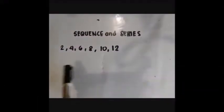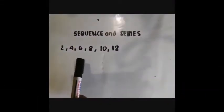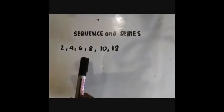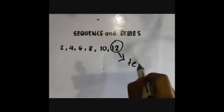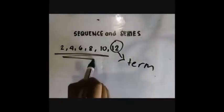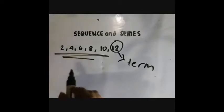This list of numbers is what we call a sequence. In this sequence, I have here numbers. These are called terms. These numbers are all called terms. This is the first term, second term, third term, fourth term, fifth term, sixth term.